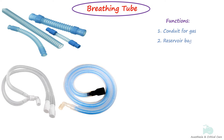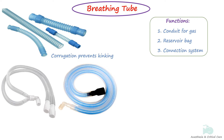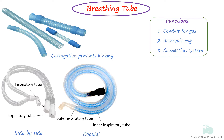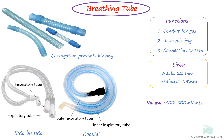Breathing tubes are hollow structures that serve as a conduit for breathing. The tube functions as a reservoir in certain systems and provides connection from one part of the system to another. They are rubber, plastic, or silicone tubes and can be impregnated with silver to add antimicrobial effect. The corrugated build prevents kinking and increases flexibility. They may be side by side or coaxial. The internal diameter is standardized: 22 mm for adults and 15 mm for pediatrics. They usually have an internal volume of 400 to 500 milliliters per meter.